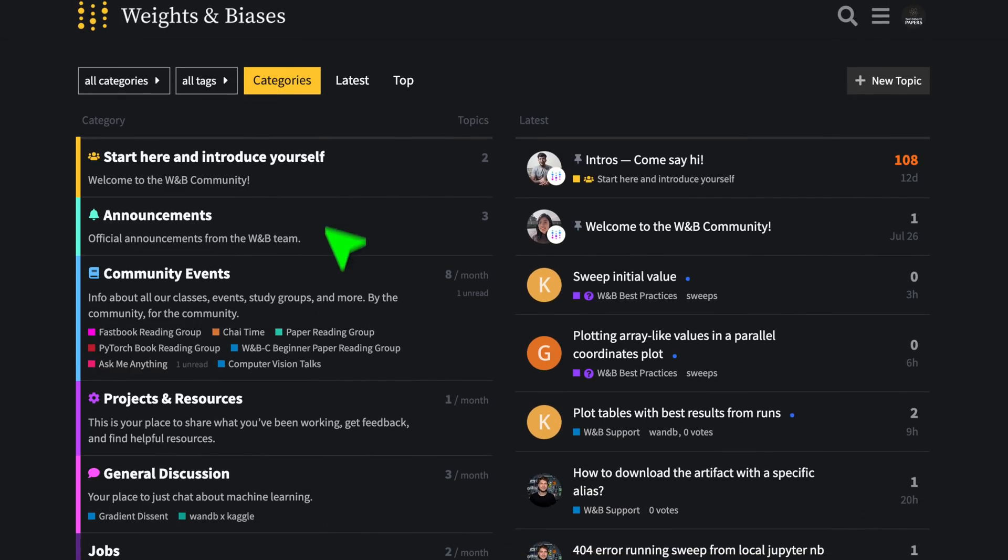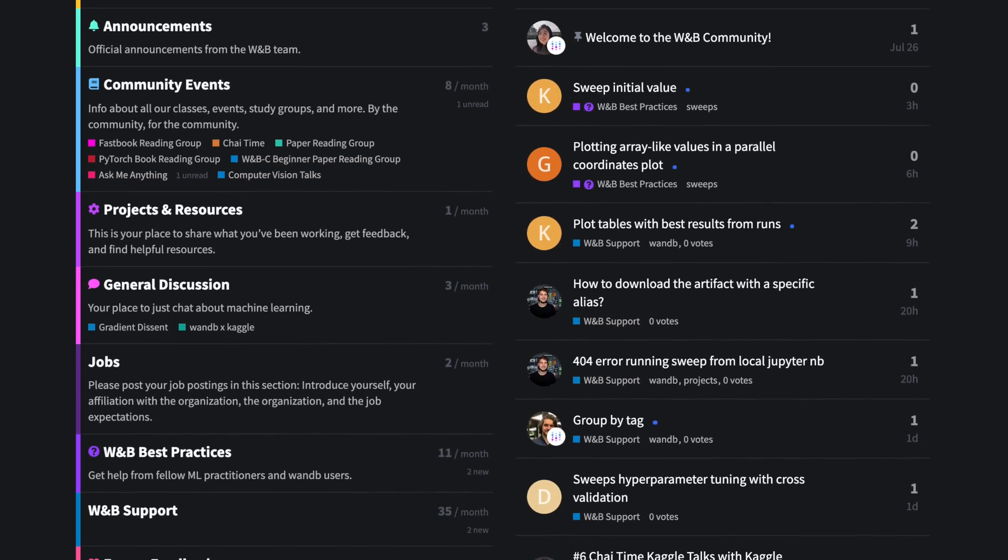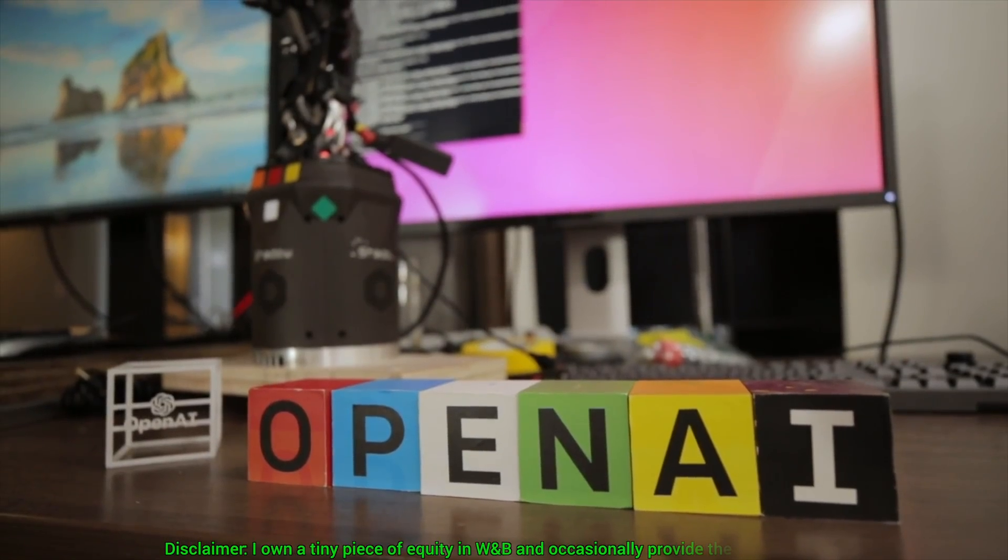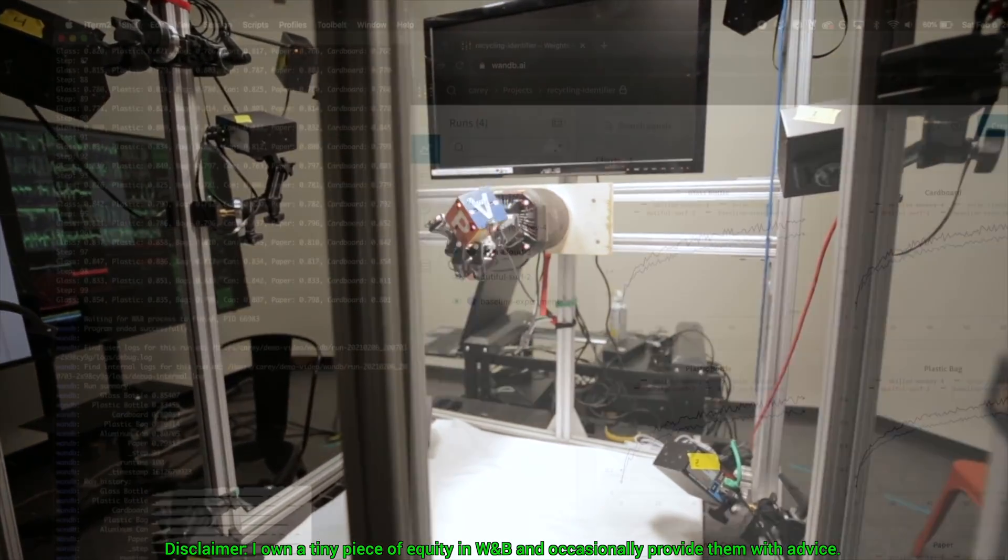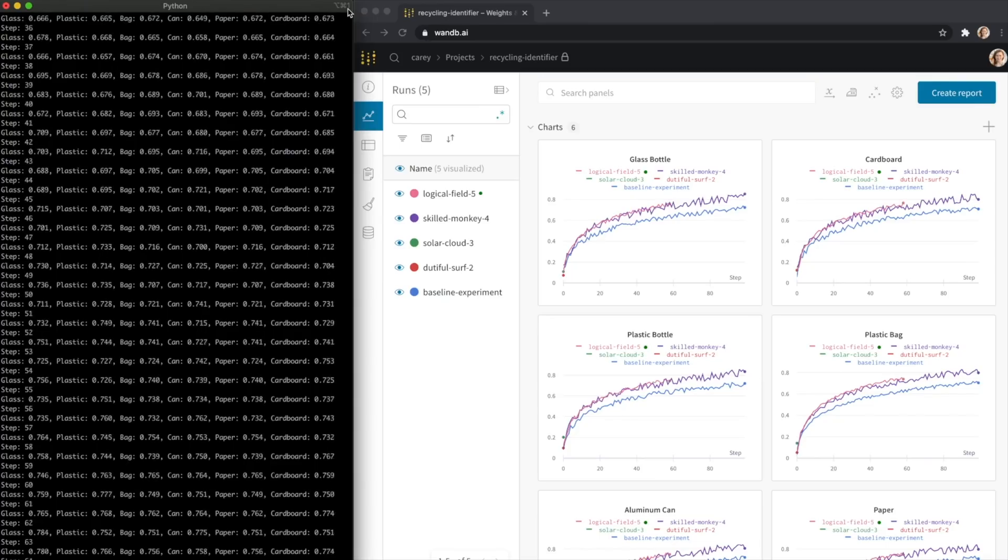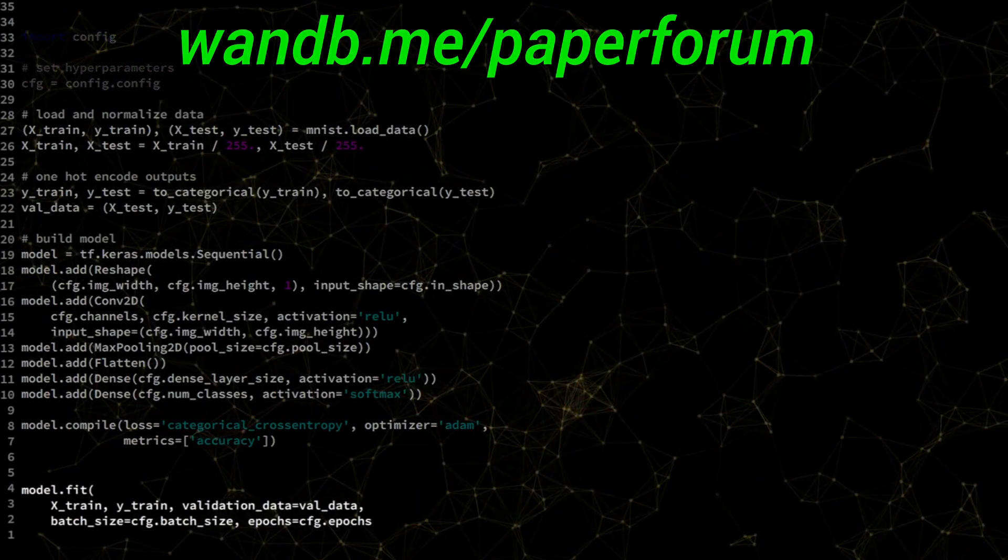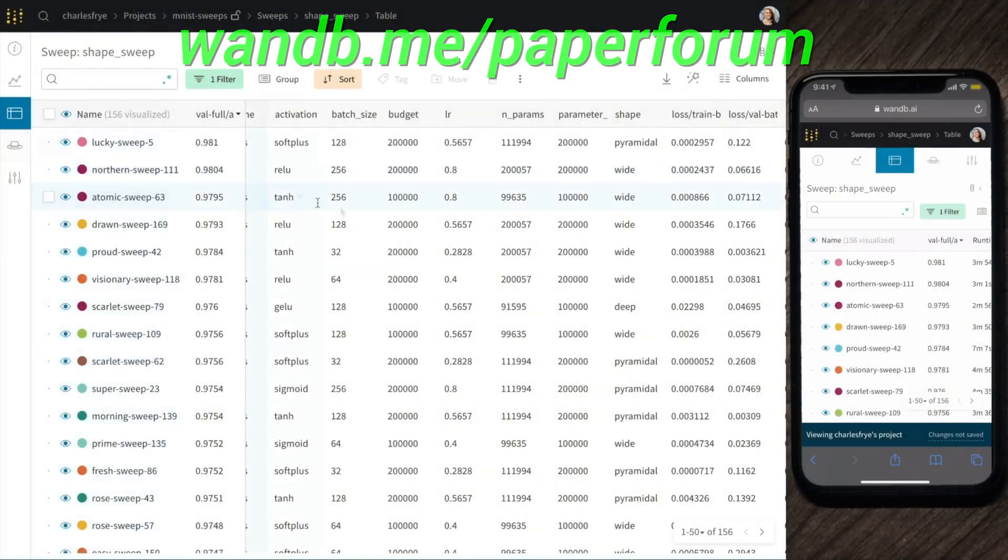This video has been supported by Weights and Biases. Look at this, they have a great community forum that aims to make you the best machine learning engineer you can be. You see, I always get messages from you fellow scholars telling me that you have been inspired by the series, but don't really know where to start. And here it is, in this forum, you can share your projects, ask for advice, look for collaborators, and more. Make sure to visit wnb.me slash paperforum and say hi, or just click the link in the video description. Our thanks to Weights and Biases for their longstanding support and for helping us make better videos for you.